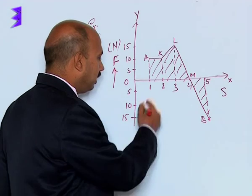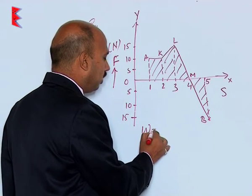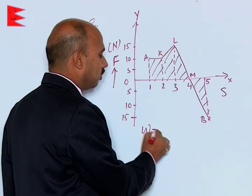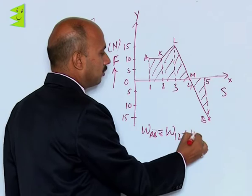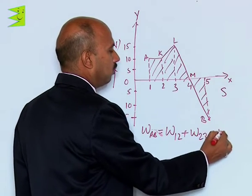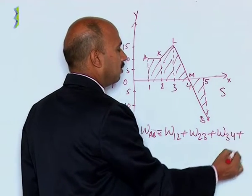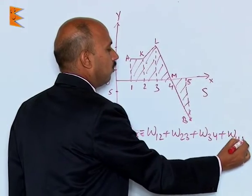If you are calculating the work done, we can write work A to B is equal to work done from 1 to 2 plus work done 2 to 3 plus work done 3 to 4 plus work done 4 to 5.